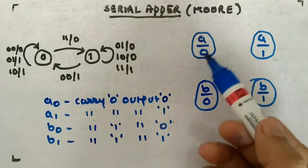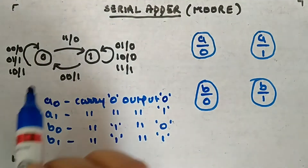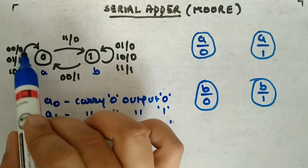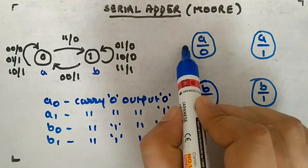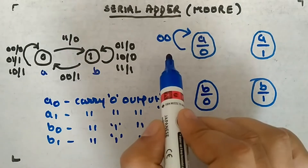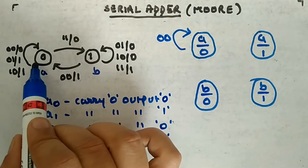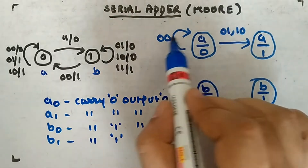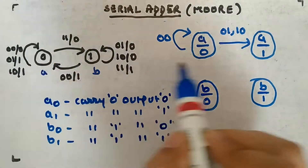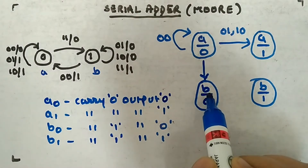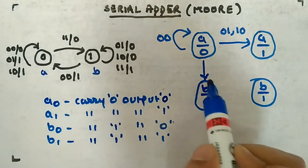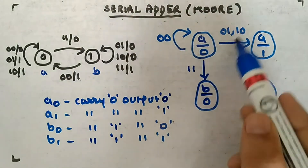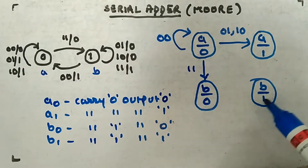Once you have this, define each input. So for state A0, with input 0,0 you get A0 with output zero. With input 0,1 or 1,0 it goes to A1 with output one. With input 1,1 it goes to B0, which is carry one with output zero. So three inputs are done, and with 1,1 the fourth is done. Now look at the other states separately.